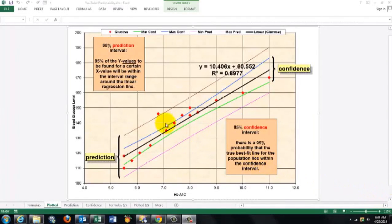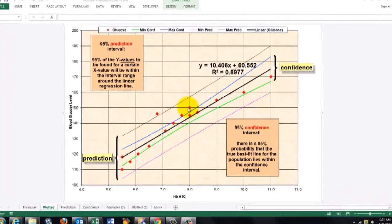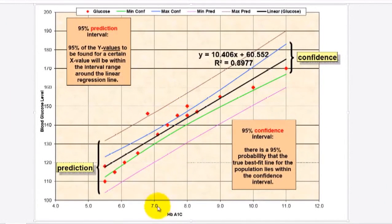Say we have a series of observations, the red spots here, for the relationship between hemoglobin A1C and blood glucose level. These are fantasy figures, and we assume there is a linear regression line. After doing some curve fitting, which I won't discuss here, I did that in another video, we came up with that linear regression line.